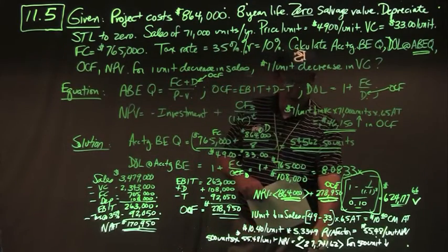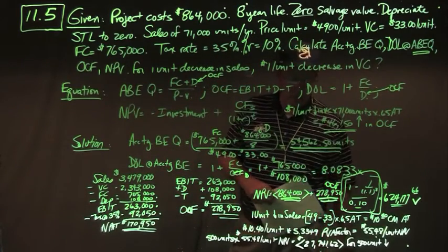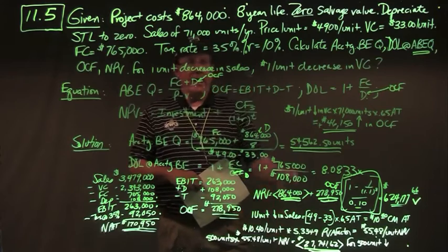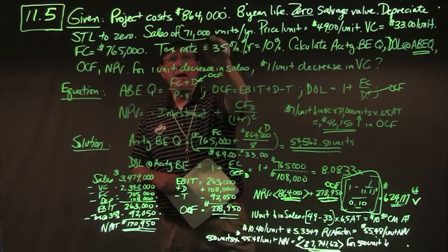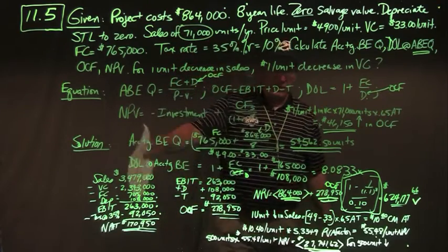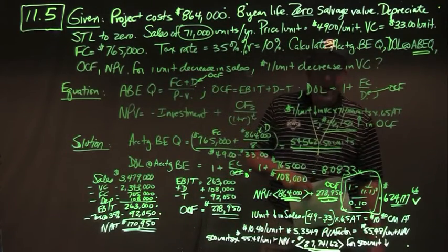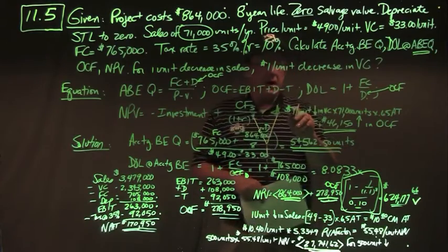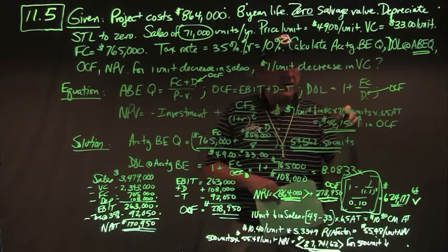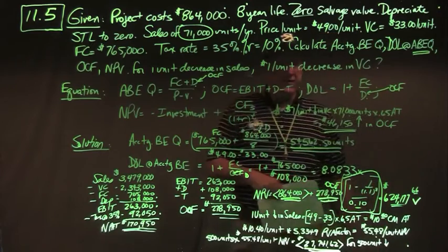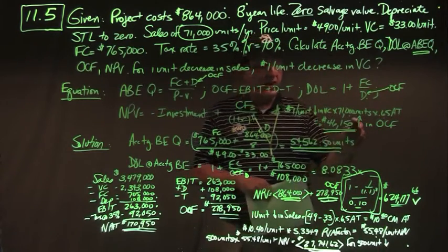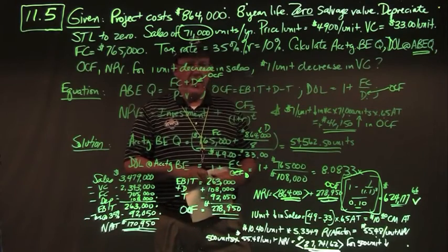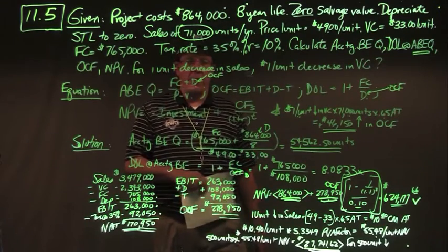The total NPV impact for a 500-unit decrease in sales is negative $27,741.62. Alternatively, we could redo the full analysis using 70,500 units. For a $1 per unit decrease in variable cost, the OCF impact is: $1 times 71,000 units times 0.65 after tax = $46,150 increase in OCF. There are your answers to problem 11.5.